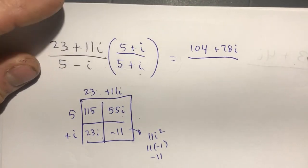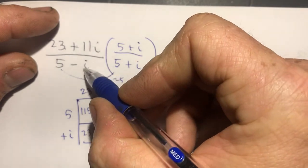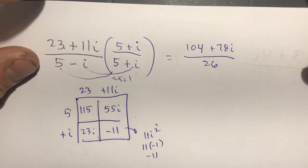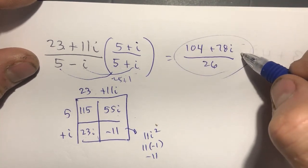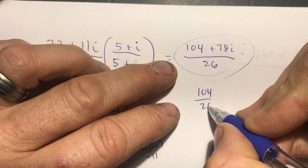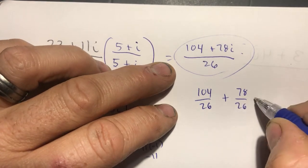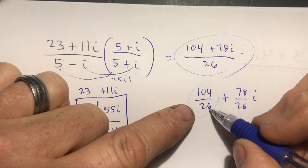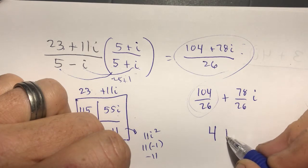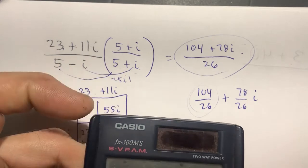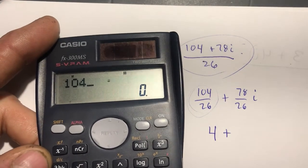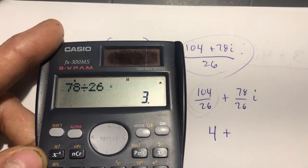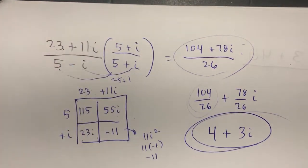For the denominator, these are conjugates: 5 times 5 is 25, 1 times 1 is 1, add them for 26. So I have 104 plus 78i over 26. Splitting up: 104 over 26 plus 78 over 26 i. Using a calculator: 104 divided by 26 simplifies to 4, and 78 divided by 26 simplifies to 3. Final answer: 4 plus 3i.